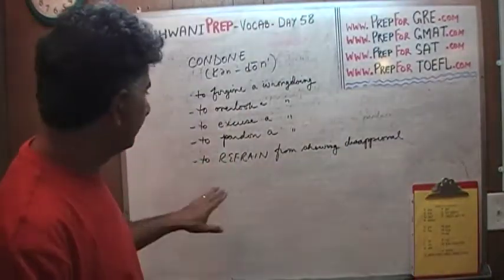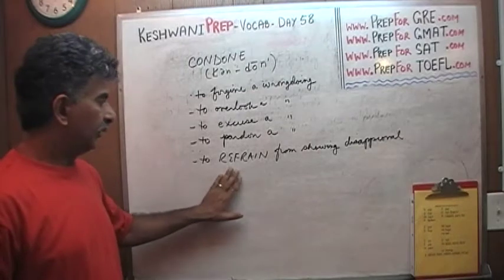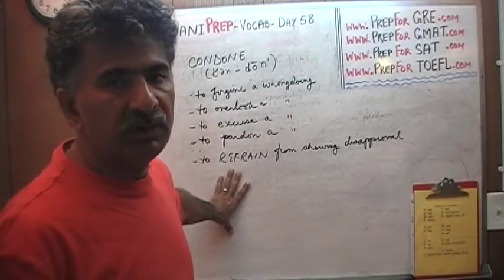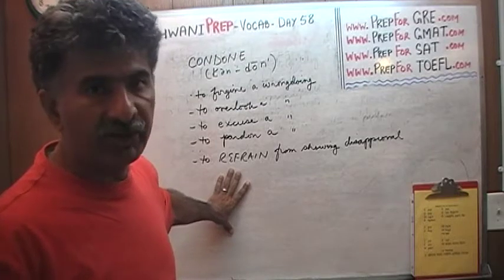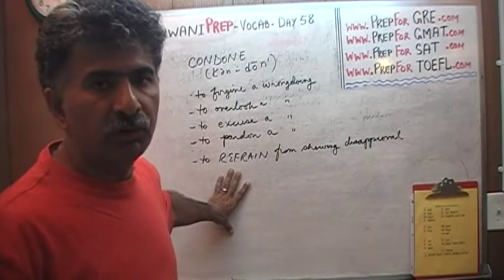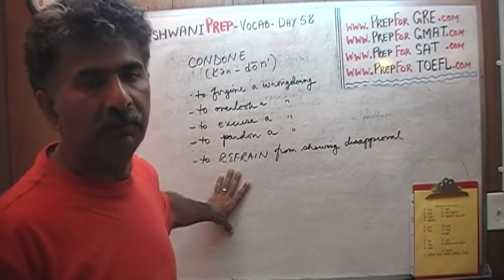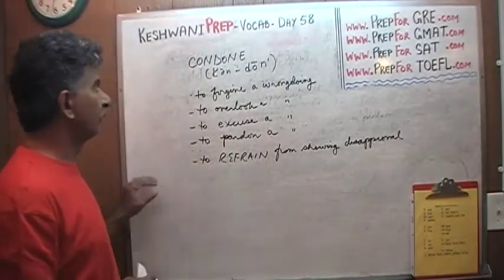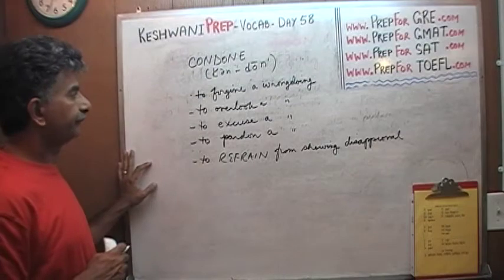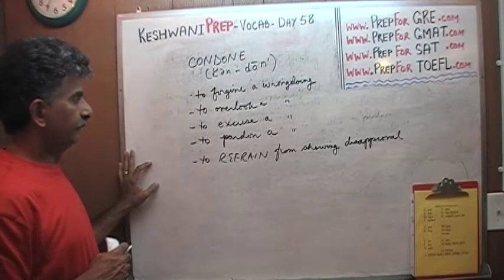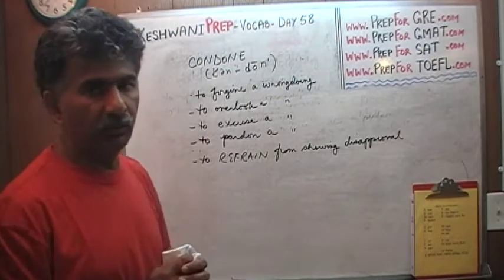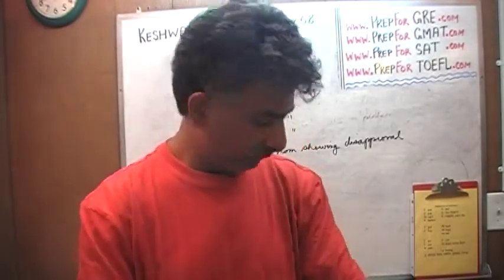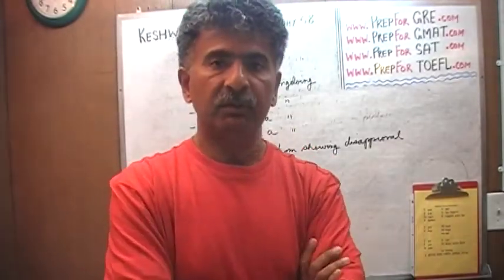Refrain is in capitals because it has two meanings, which is why I want to cover it. As a verb, to refrain from doing something means to not do that — to keep yourself from doing something, to restrain yourself, to hold yourself back. So if someone says 'we do not condone such behavior,' they're saying we do not tolerate, excuse, or pardon such behavior.